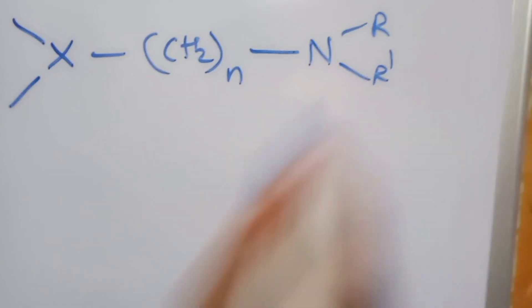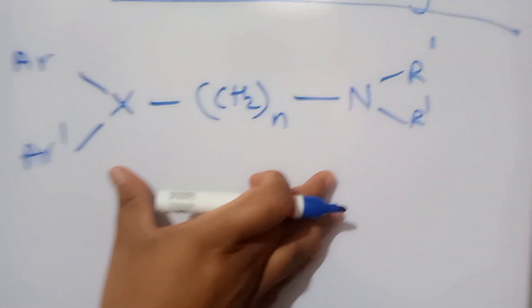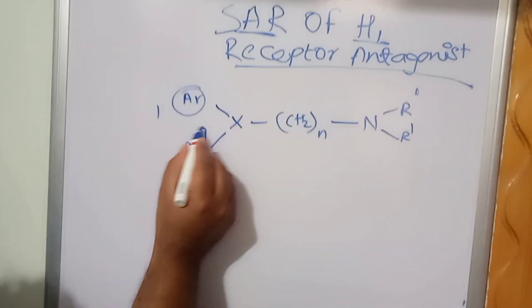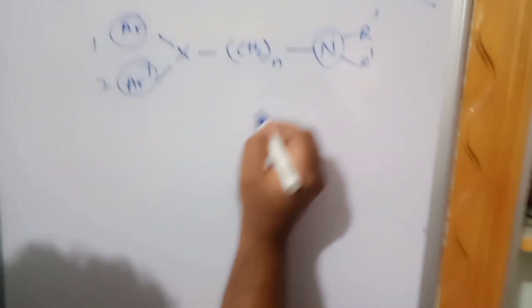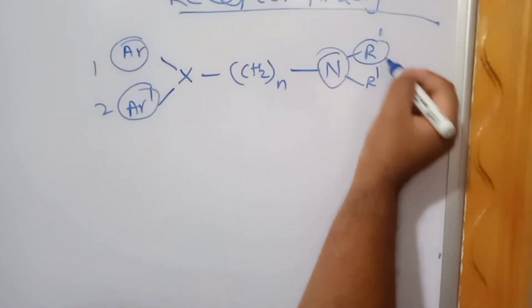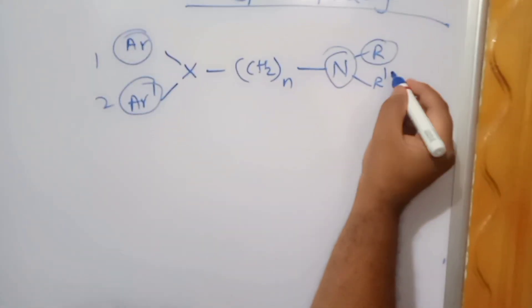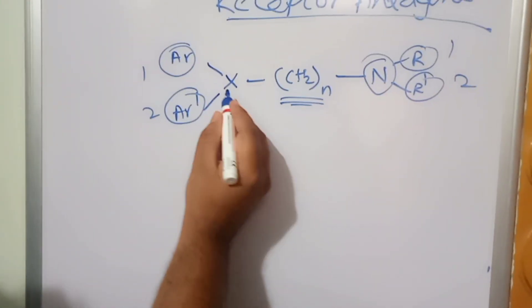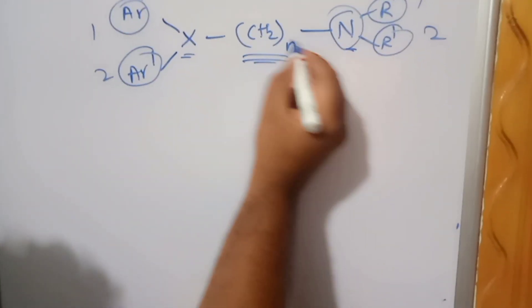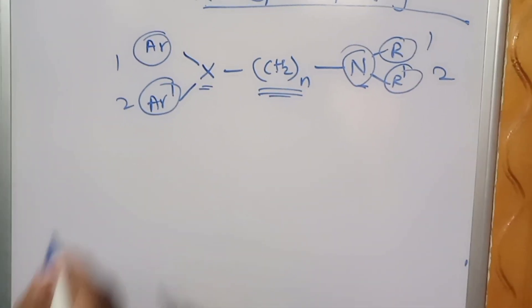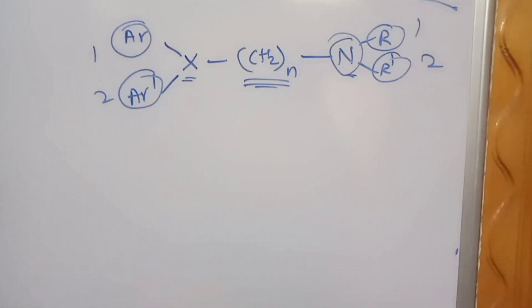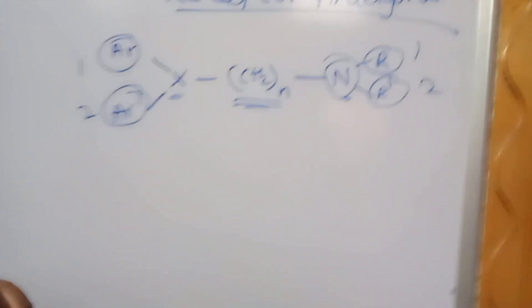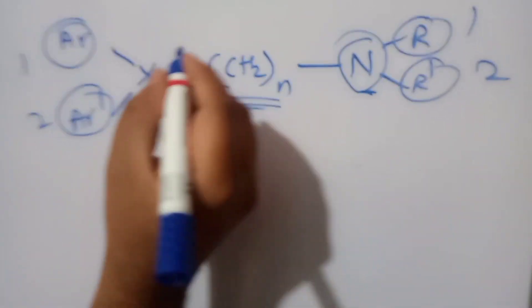Here is the skeleton of the H1 receptor antagonist. It requires two aryl groups (Ar and Ar'). It requires a terminal nitrogen bearing alkyl groups (R and R'). It contains a side chain which is separated by X from the nitrogen, with N number of carbons in the chain. To understand this, we need to know the target and the mechanism of action of H1 receptor antagonists.